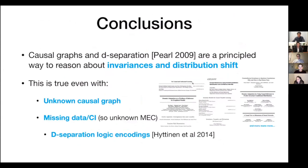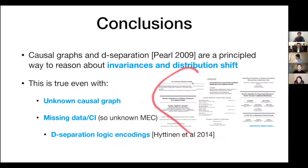To conclude: I hope I've convinced you that causal graphs and distribution shifts offer a principled way to reason about invariances across distribution shifts. Crucially, this can work even when the graph is unknown, and even with missing data or missing conditional independence tests. Logic-based methods like those from Hittin and Netal (2014) help handle missing conditional dependencies. There is a lot of exciting work in this space. Thank you.